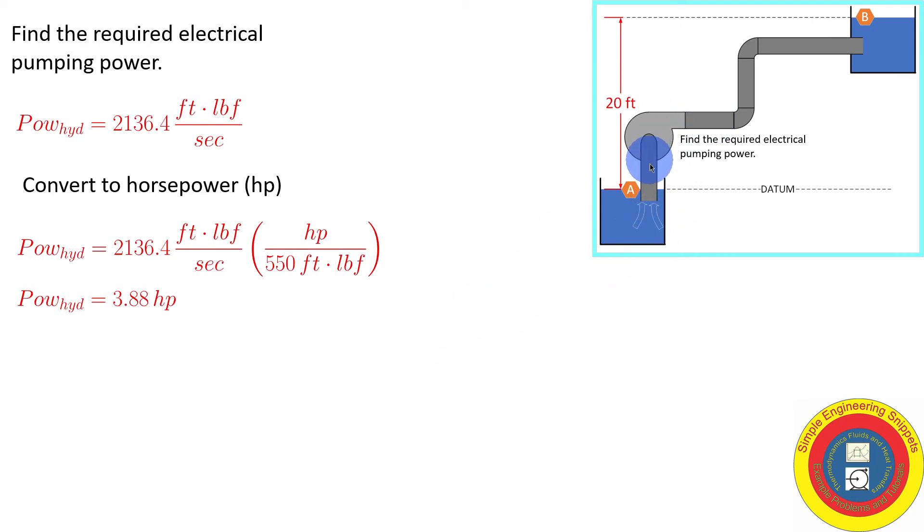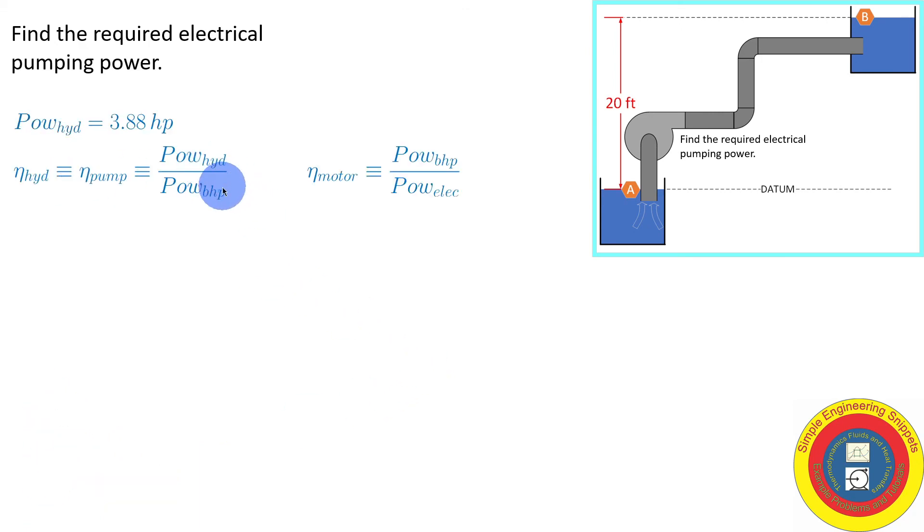We want to find the electrical power that's being supplied to the motor that is driving the pump. We're going to make use of the efficiencies that are provided. The hydraulic efficiency and the pump efficiency are one and the same, defined as the hydraulic power divided by the brake horsepower. That's the mechanical power coming out of the shaft of the motor. The motor power is the brake horsepower divided by the electrical power, which is what we're looking for. Luckily, these two efficiencies are known.